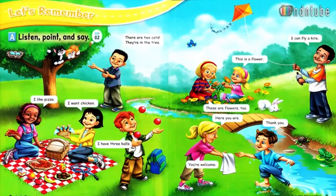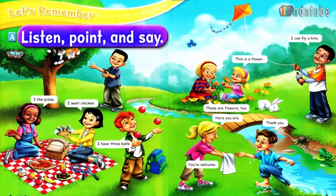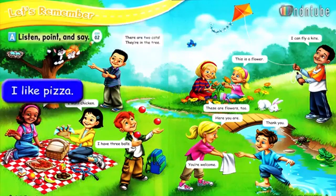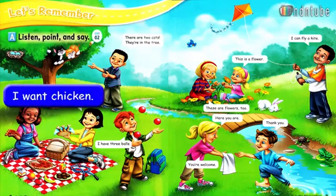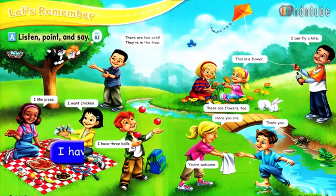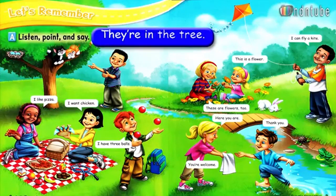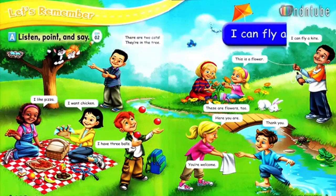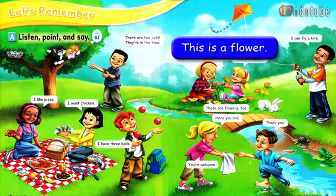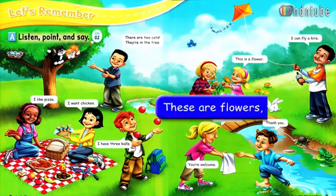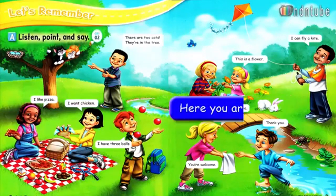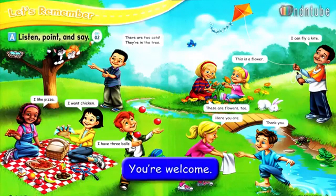A. Listen, point, and say. I like pizza. I want chicken. I have three balls. There are two cats. They're in the tree. I can fly a kite. This is a flower. These are flowers, too. Here you are. Thank you. You're welcome.